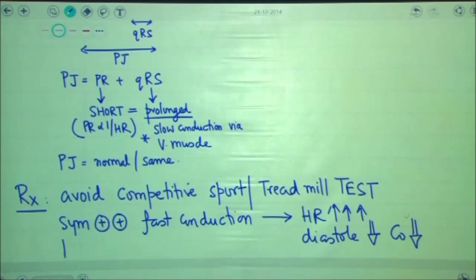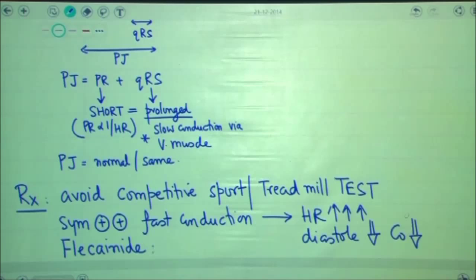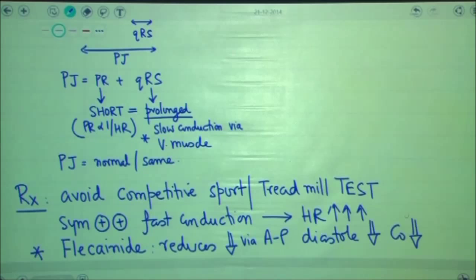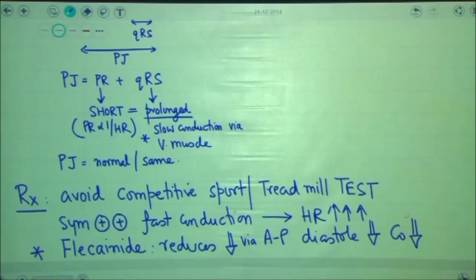We can put these patients on drugs. The drugs that reduce conduction via the accessory pathway include flecainide. Flecainide reduces the conduction speed via the accessory pathway, which can prevent the arrhythmia. Otherwise, atrial fibrillation in these patients can immediately be converted into ventricular fibrillation.